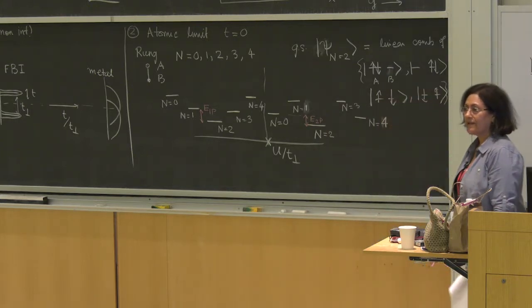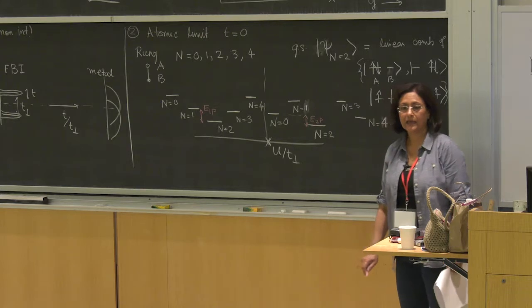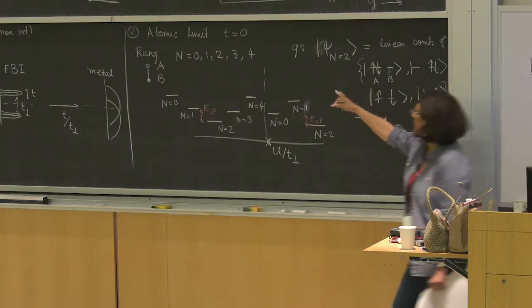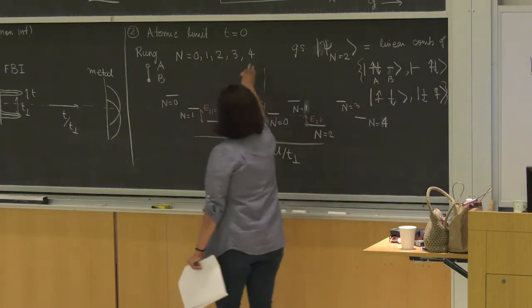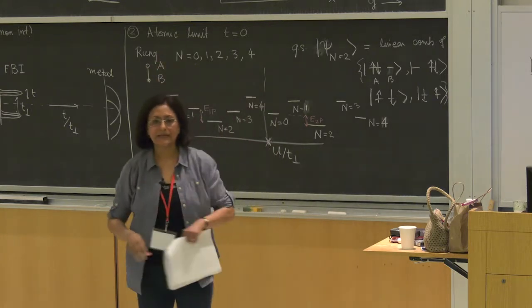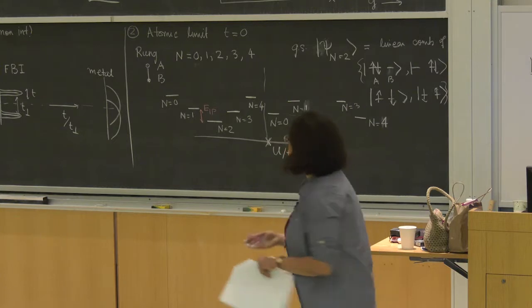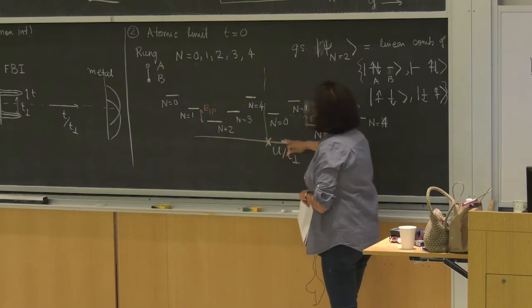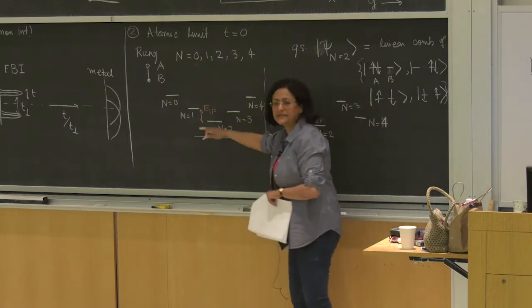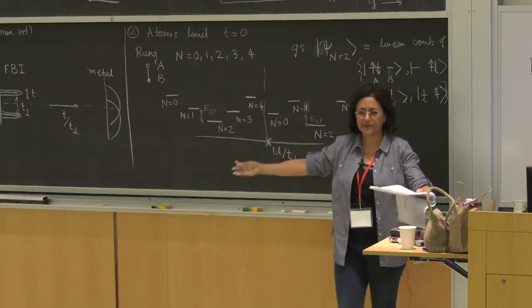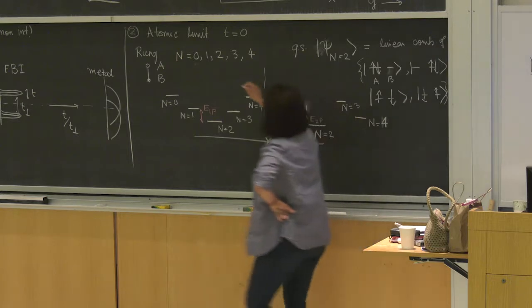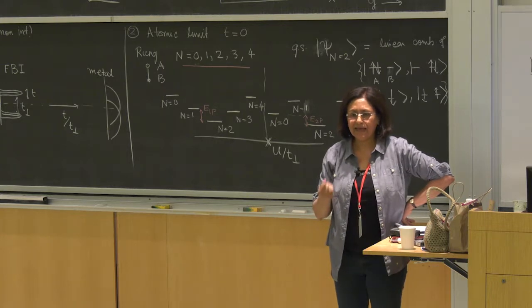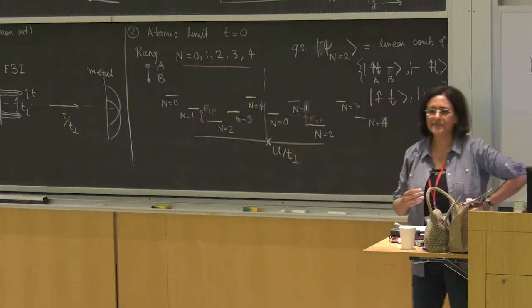Can you explain how you get this ordering of energies of different levels? You can just look at this problem with N equal to zero, one, two, three, four, take that Hamiltonian, diagonalize it, and you'll see that the structure of your state — this is your ground state — and then relative to that you can get your excited states. You're essentially taking capital N as your quantum number and organizing your states within that.